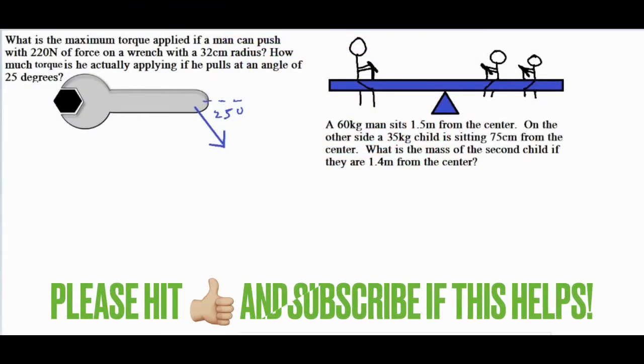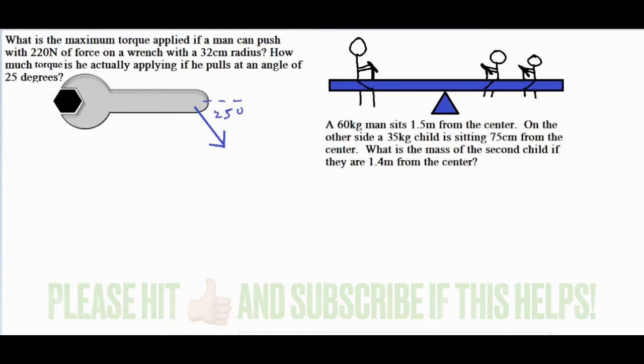In this video I'm going to be talking about torque with a wrench problem and a seesaw problem. The first question says what is the maximum torque applied if a man can push with 220 newtons of force on a wrench with a 32 centimeter radius, and also how much torque is he actually applying if he pulls at an angle of 25 degrees?